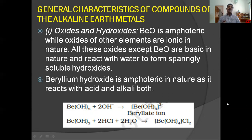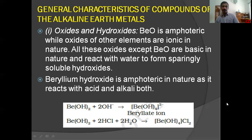They react with water to form sparingly soluble hydroxides. Alkali metal hydroxides are readily soluble in water, but alkaline earth metal hydroxides are sparingly soluble. Beryllium hydroxide is amphoteric. Reaction with base: Be(OH)2 + 2OH− gives [Be(OH)4]2− (beryllate ion). Reaction with acid: Be(OH)2 + 2HCl + 2H2O gives [Be(H2O)4]Cl2.